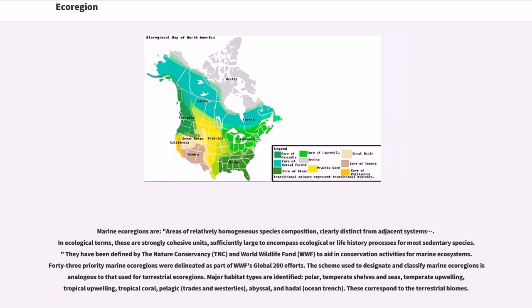The scheme used to designate and classify marine ecoregions is analogous to that used for terrestrial ecoregions. Major habitat types are identified: polar, temperate shelves and seas, temperate upwelling, tropical upwelling, tropical coral, pelagic, abyssal, and hadal. These correspond to the terrestrial biomes.